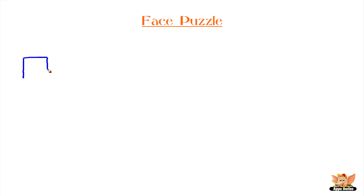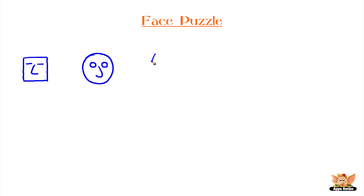Here you will see a group of faces with one missing face. First we have a square face, then a round face, a triangle face, and the pattern follows again.